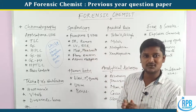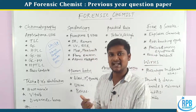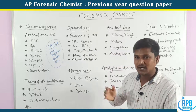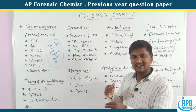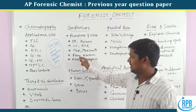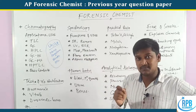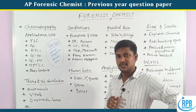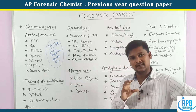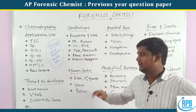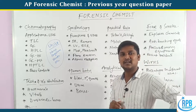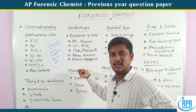ESR spectroscopy is used for radical systems. Also important are fire-scene analysis, flame emission spectroscopy, and atomic absorption spectroscopy. When we look at atomic absorption — recent questions from 2001 in Maharashtra have appeared at the top level.